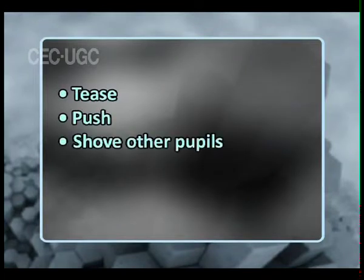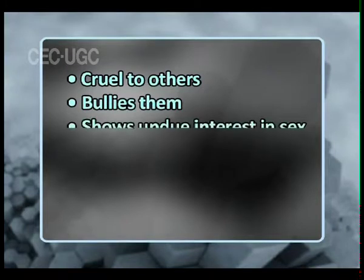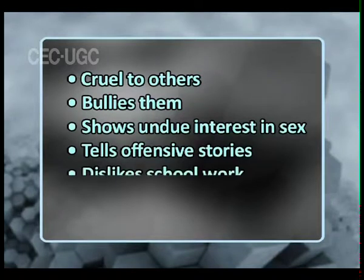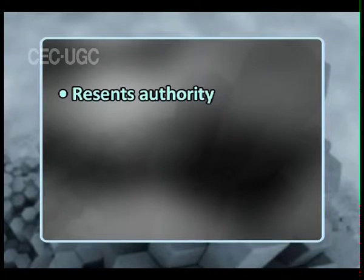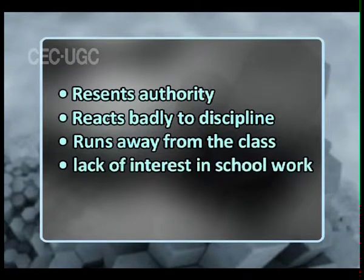Number four: the child who cannot adjust himself in the school environment tends to tease, push, and shove other pupils. Number five: the maladjusted child has behavior disorders generally seen in antisocial behavior. He is cruel to others, bullies them, shows undue interest in sex, tells offensive stories, dislikes school work, resents authority, reacts badly to discipline, runs away from class, and shows a sudden complete lack of interest in school work. He also has psychosomatic disturbances — for example, he begins to vomit or develops constipation and diarrhea.